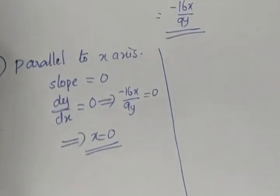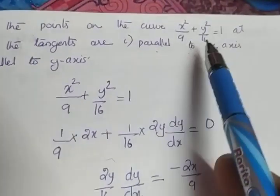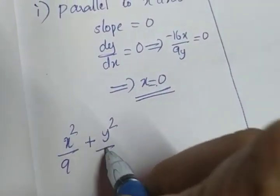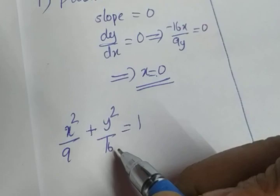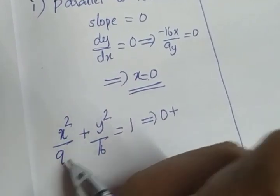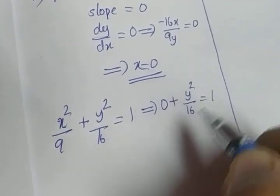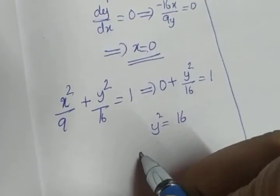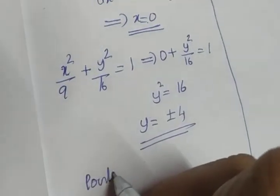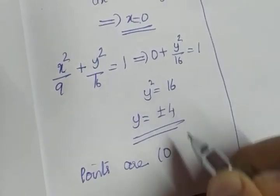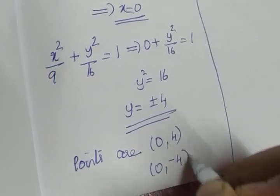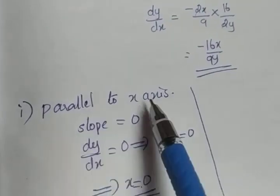To find the y-coordinate, substitute x = 0 in the given equation x²/9 + y²/16 = 1. This is an ellipse. Putting x = 0: 0 + y²/16 = 1, so y² = 16, giving y = ±4. The points when the tangent is parallel to the x-axis are (0, 4) and (0, −4).